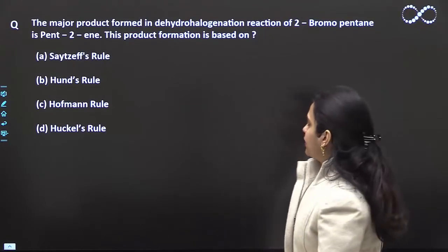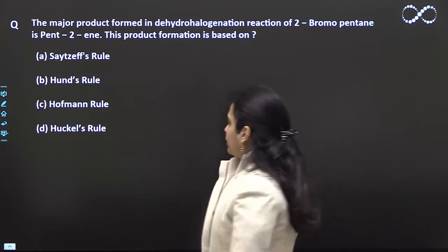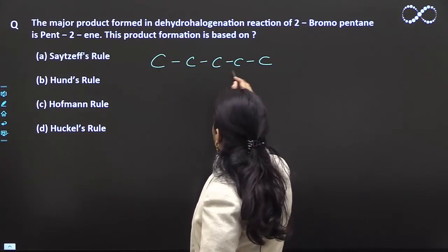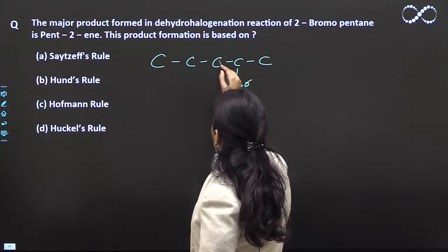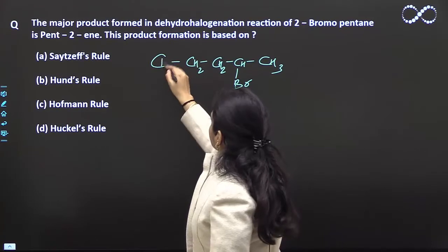Hello students, in this question the major product formed in the dehydrohalogenation reaction of 2-bromopentane. 2-bromopentane has 1, 2, 3, 4, 5 carbons. So this is CH2, this is CH3, this is CH3, H2, CH3.